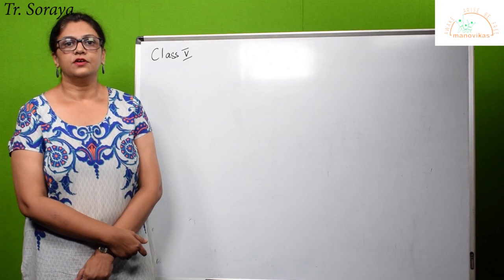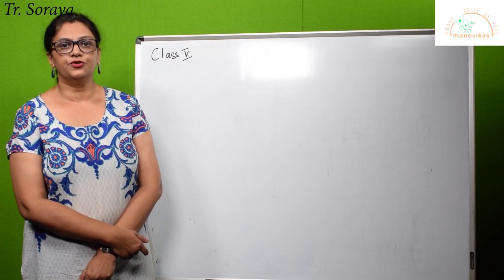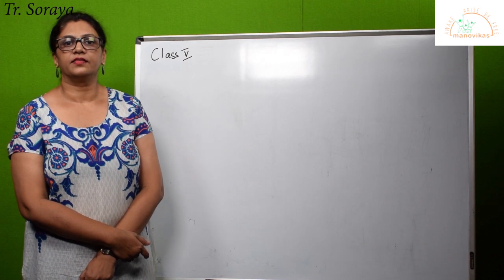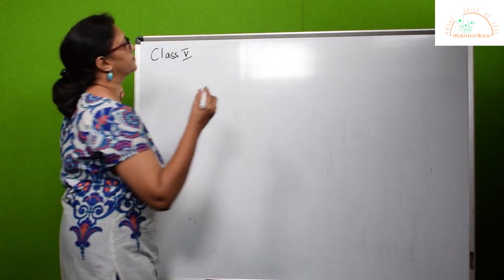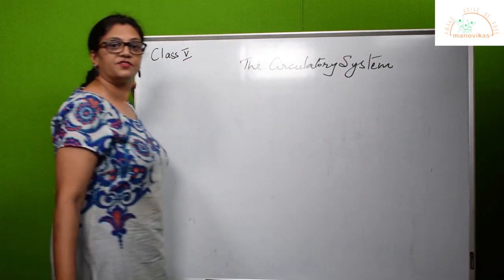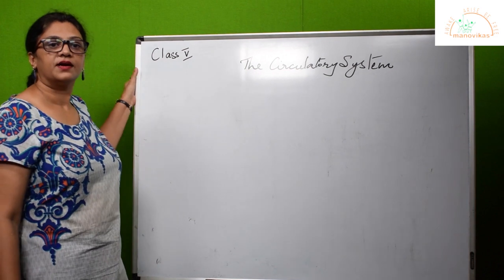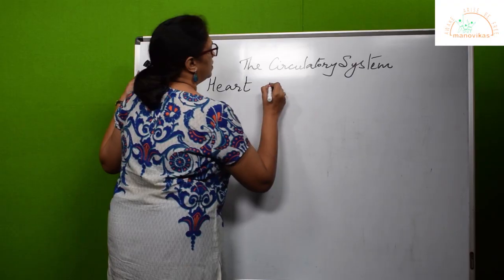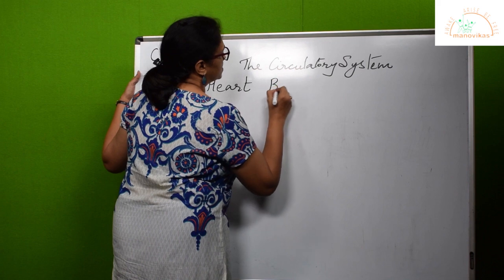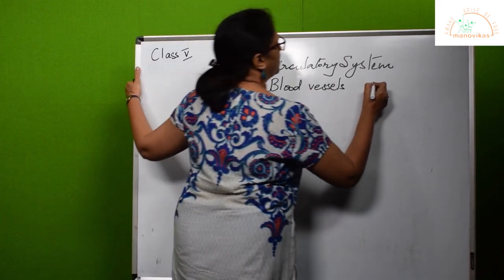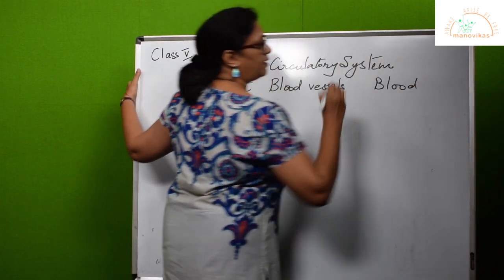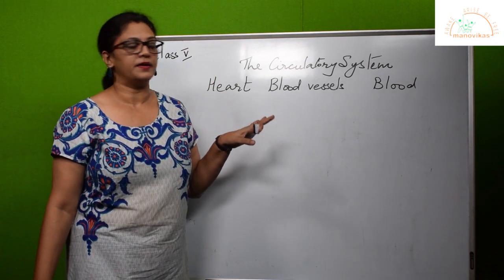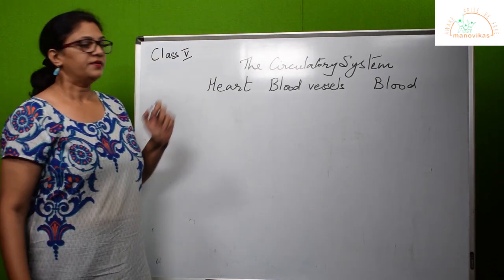Hello students. Today's video is for Class 5 on the first topic: the circulatory system. The circulatory system consists of three parts — the heart, the blood vessels, and blood. Now let us take up each part and study.